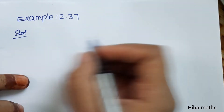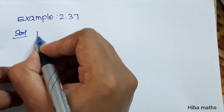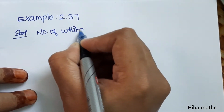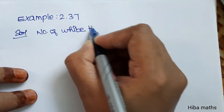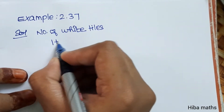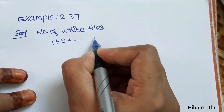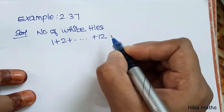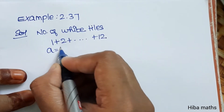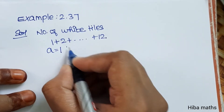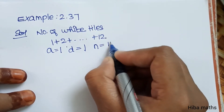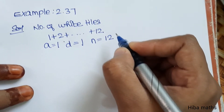In the solution, the first row gives the number of white tiles. The first row is the number of white tiles — there are 1, 2, up to 12. Is that correct? Now, a is equal to 1, d is equal to 1 (since 2 minus 1 is 1), and the last value l is 12.